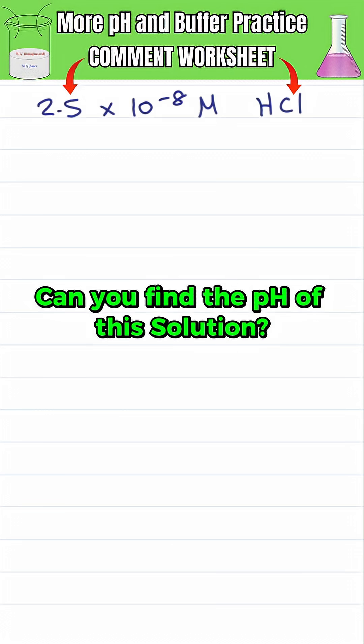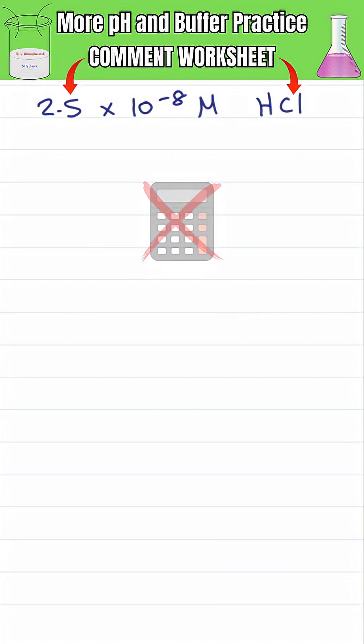Can you find the pH of this solution without a calculator? HCl is a strong acid with complete dissociation to give me 2.5 times 10 to the minus 8 molar H plus ions in solution.